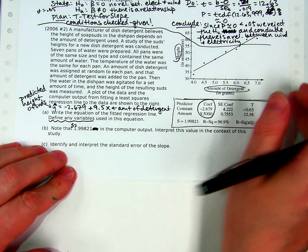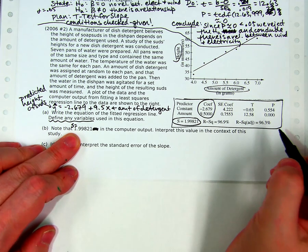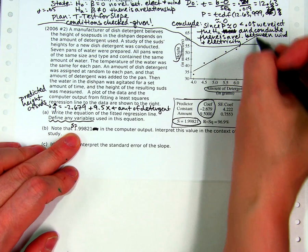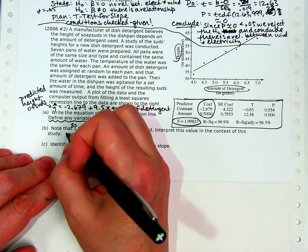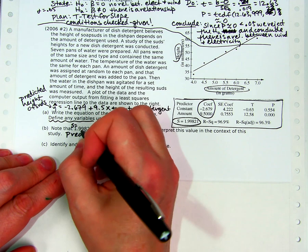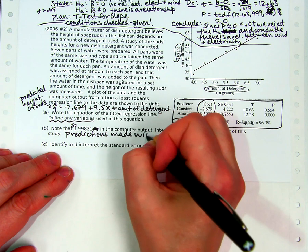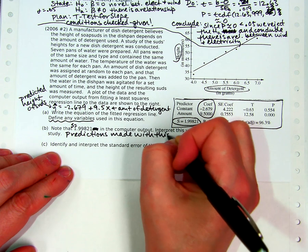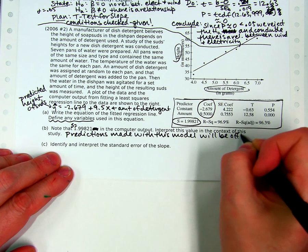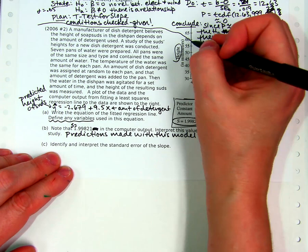Here's one we haven't answered lately. S is 1.99821, what does that mean? S is the standard deviation of the residuals, or how far off the line on average. Another way of saying it is it's a typical prediction error. Predictions made with this model will be off by 1.998 millimeters.